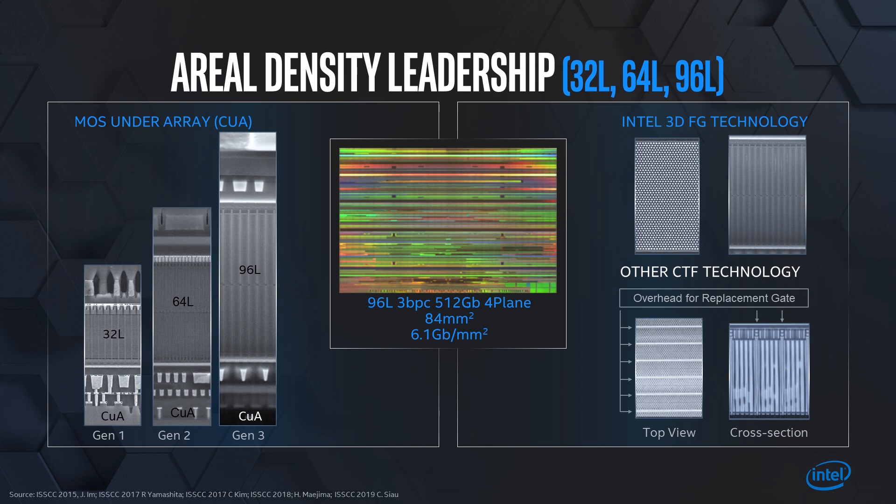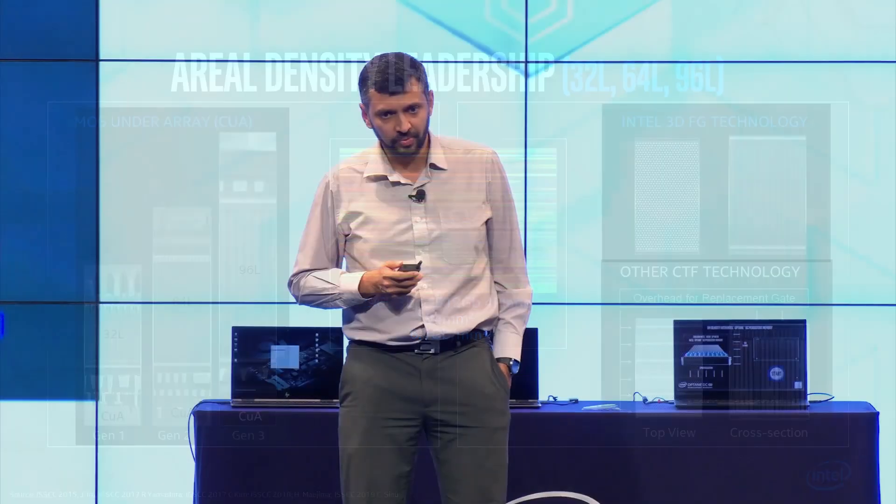The net result of these two, and lots of other innovations that we do — but these two are the ones I'm showcasing — is what I have here: a die photo in the center. It is our 96-layer, 3-bit per cell, 512-gigabyte, 4-plane die, and it has the highest aerial density there is for this technology generation.